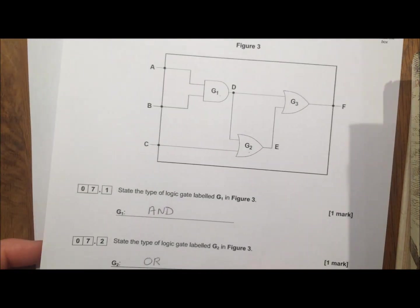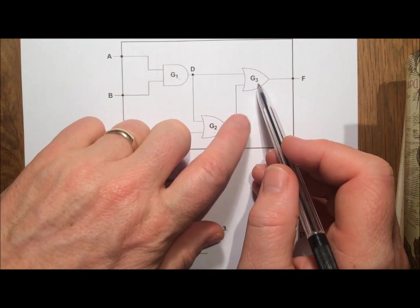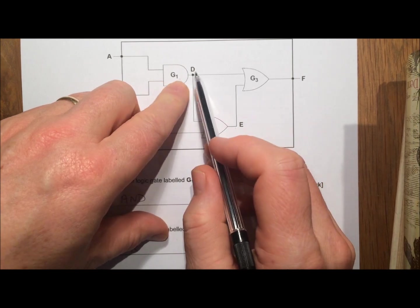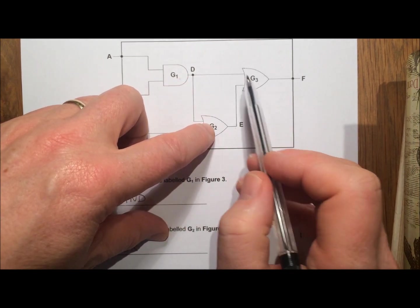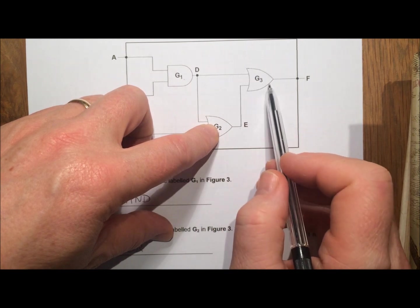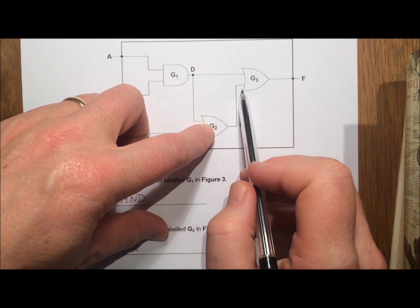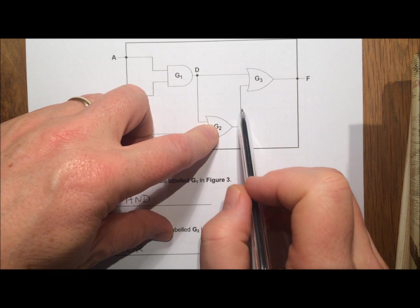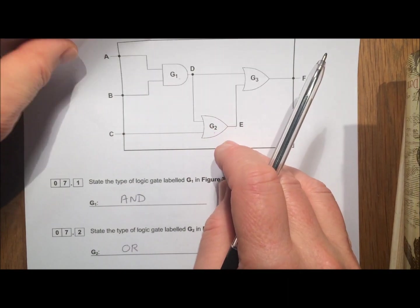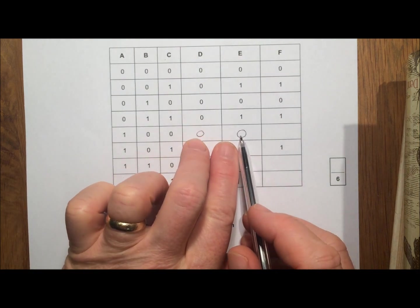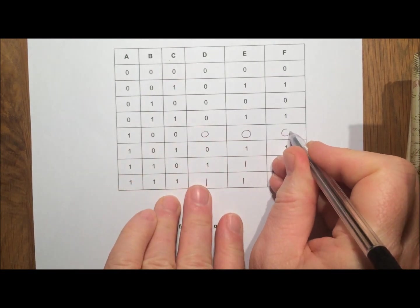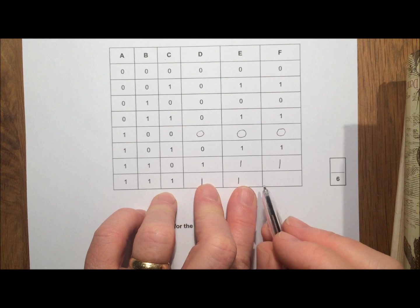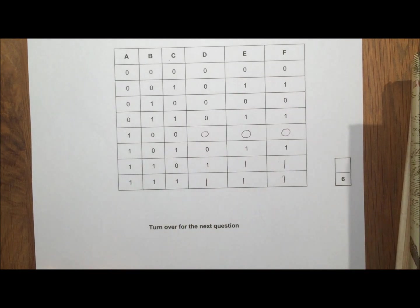And now to F. So in F you'll see that F comes from an input from D. It just happens to have gone two different ways. So D goes into here and E. So D and E are the inputs for G3 that produces F. Again this is an OR gate, so F will only produce a 0 if D and E are both 0. So D and E are both 0 here, so F will be 0. D and E are both 1 here, so that will be 1. And D and E are both 1 here, so that will be 1. And there's your 6 marks. We'll see you next time.